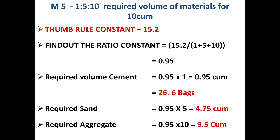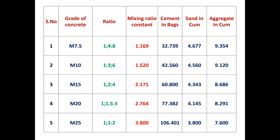So this is how you calculate the volume of materials — cement, fine aggregate, and coarse aggregate — for different grades of concrete. First, remember the thumb rule constant 15.2. Then find the ratio constant: 15.2 divided by the sum of ratios (1+5+10). Based on that ratio constant, find the values of cement, fine aggregate, and coarse aggregate. You can apply the same method to all grades of concrete.